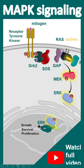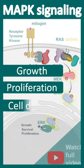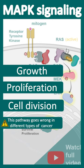MAP kinase signaling pathway is associated with growth, proliferation, cell division, and it is also associated with different kinds of cancer.